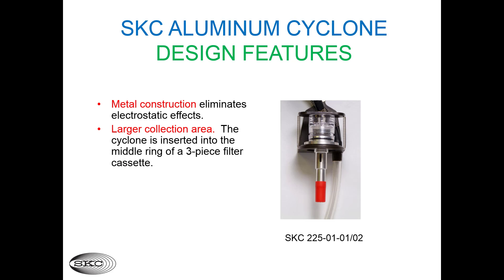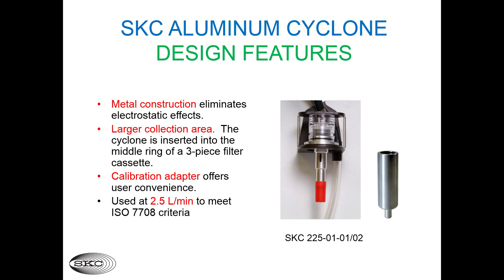Alternatively, the SKC aluminum cyclone offers users some unique advantages. The metal construction eliminates static electricity concerns. There is a larger collection area since the cyclone is inserted into the middle ring of a three-piece filter cassette, and a calibration adapter eliminates the need to use a calibration jar. Compared to the Dor Oliver, the higher flow rate of 2.5 liters per minute enhances the limit of detection. The aluminum cyclone is listed in the OSHA final rule on silica and NIOSH respirable dust methods.